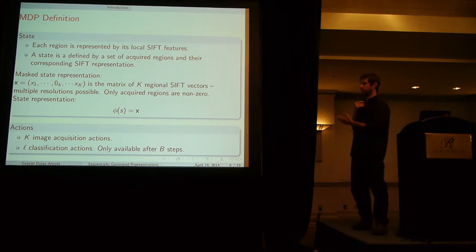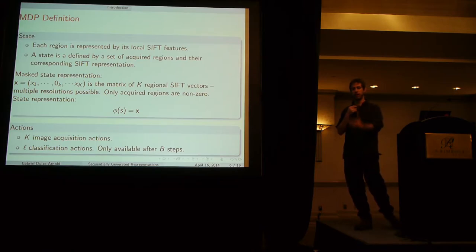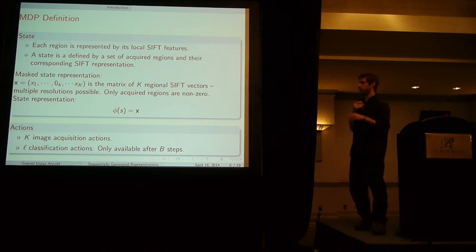We have our classification actions. In certain tasks, we could allow the classifier to classify at any point. We could actually learn when to stop acquiring and choose to classify. But in this particular figure, we chose to just fix the budget. These classification actions appear only once you've acquired a certain number of regions. At that point, we no longer acquire regions but force the classifier.